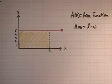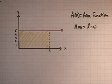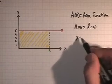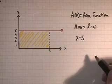Looking at this rectangle, it is fairly straightforward to see that its length is this point x, and its width is 5.